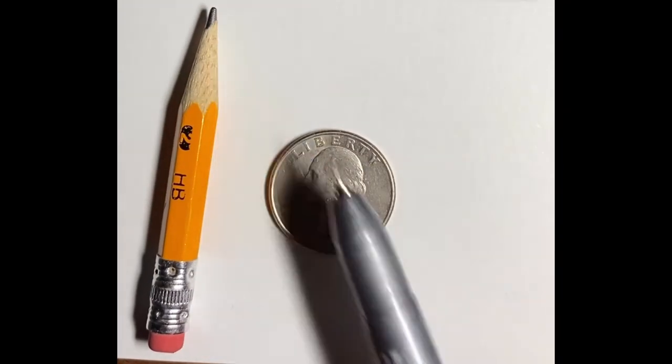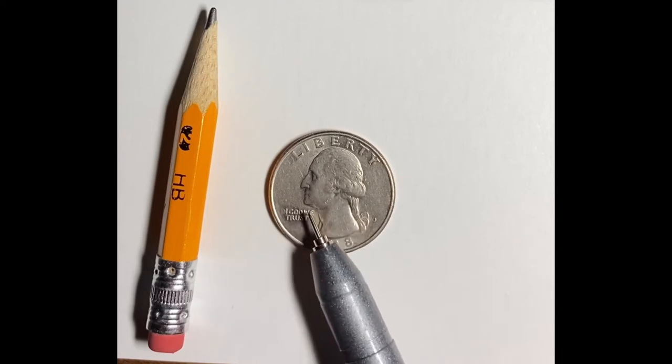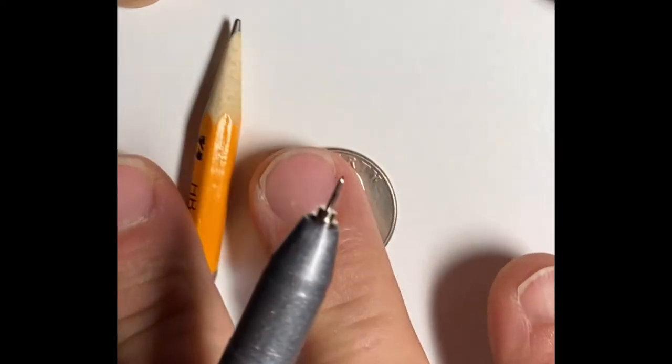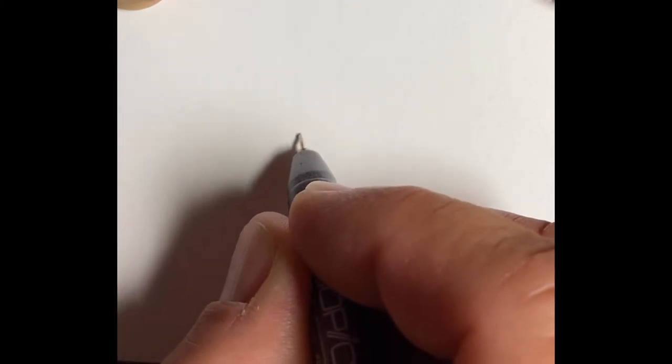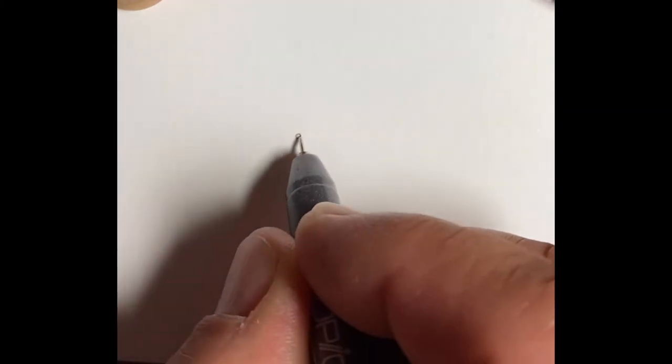And there's the Copic multiliner 0.03. You can see how tiny that tip is. Thanks again for tuning in to the channel. Please subscribe and like if you haven't and share with others. So I'll get started here. Usually I start with the facial features.